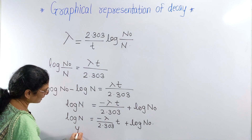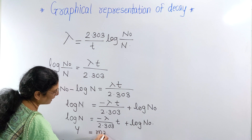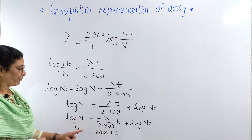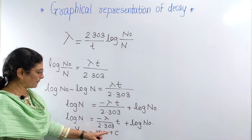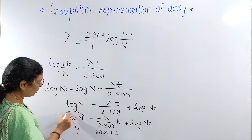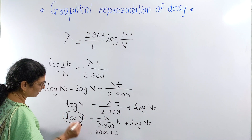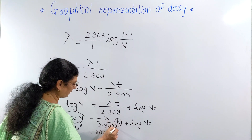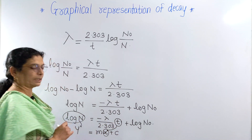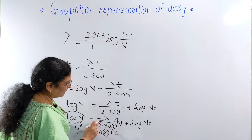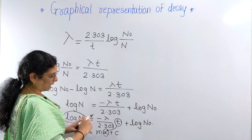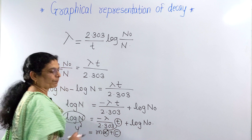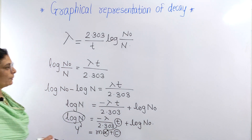This matches the straight-line equation y equals mx plus c, where y is log of N (plotted on the y-axis), x is t (time, plotted on the x-axis), m is the slope of the line, and c is the intercept. So we can obtain a straight-line graph.